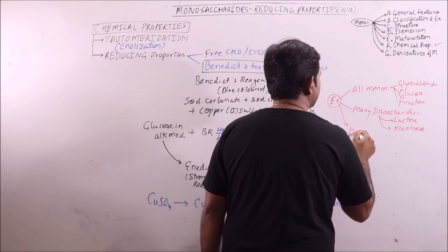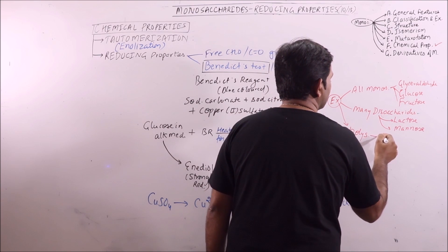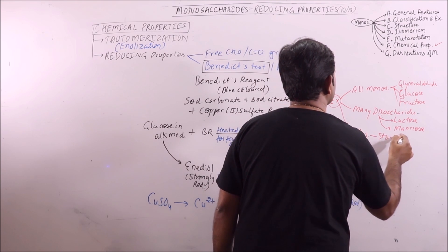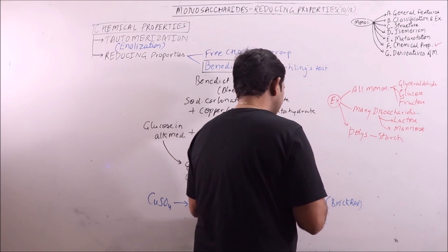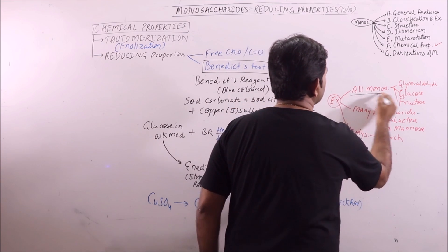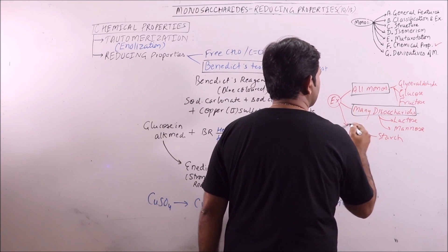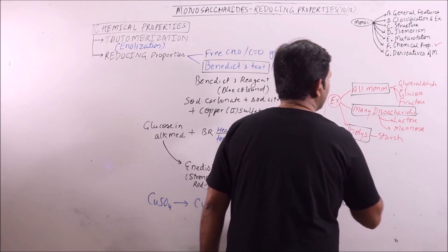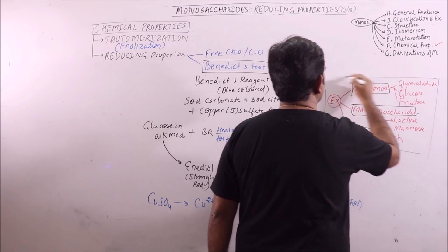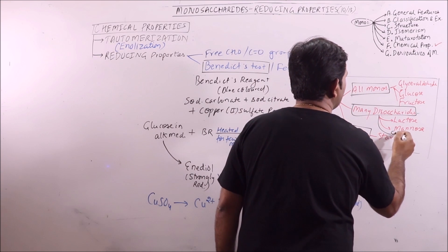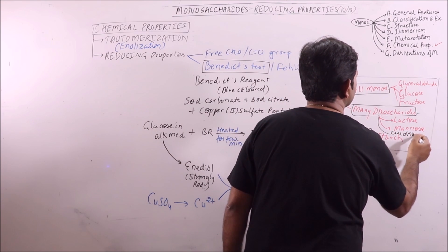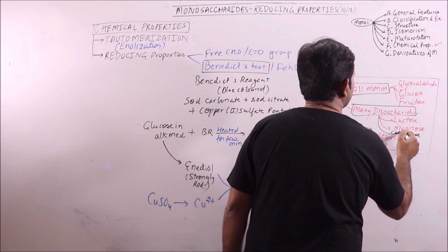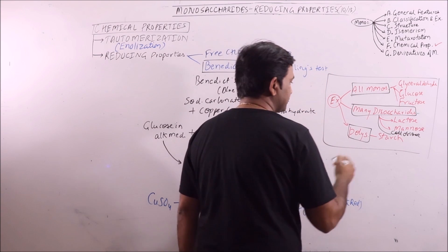So these are the examples of reducing sugars. Even you can take cellobiose, it will also give the presence of reducing sugar.